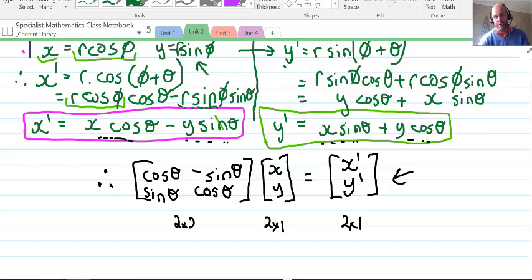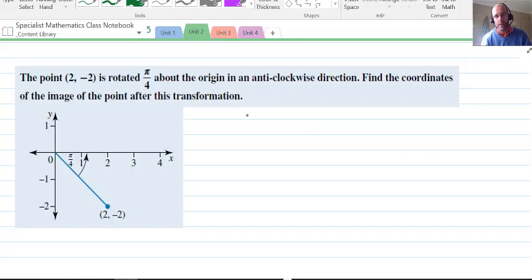Let's finish off with an example. Here's an example with radians, but you'll see examples with degrees too. We have the point (2,-2) rotated π/4 radians about the origin in an anticlockwise direction, so that's positive. Find the coordinates of the image. There's our point P, and when we rotate it about the origin it will track around and P' will be there somewhere.